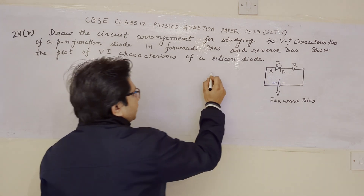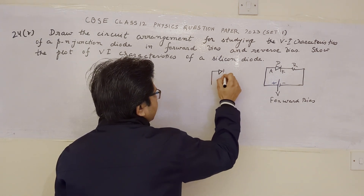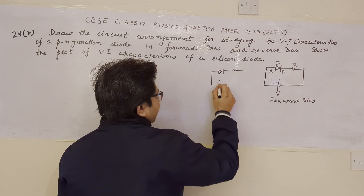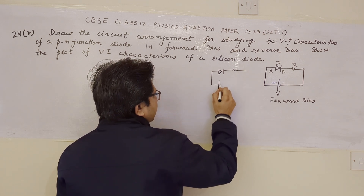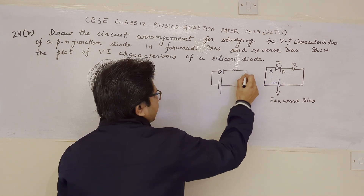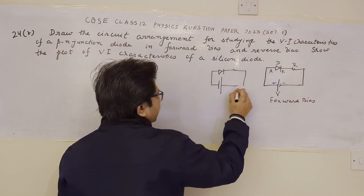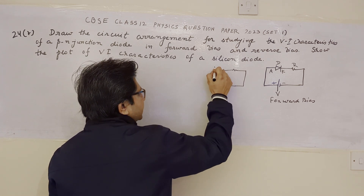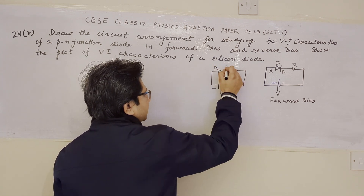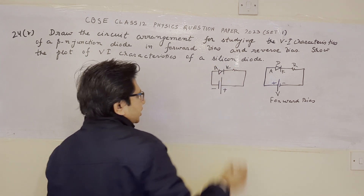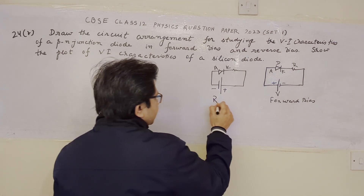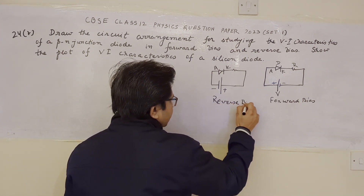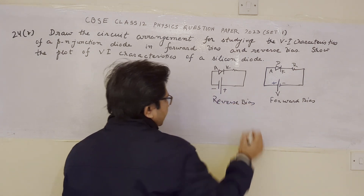Second, we have to draw the diode in reverse bias. When the diode is in reverse bias, the negative terminal of the battery is connected with the anode side — so this is minus, this is plus. Minus is connected to the anode side and plus is connected to the cathode side. This is the reverse bias arrangement.